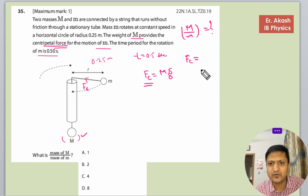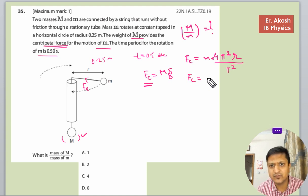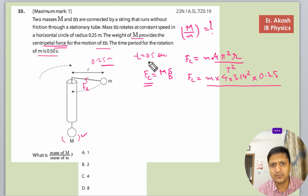The formula for centripetal force is given in your data booklet. That is 4π²R divided by T². So I'm using your data booklet. Fc equals M into 4 into 3.14, then the radius R is 0.25, and the time given is 0.5.